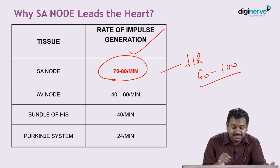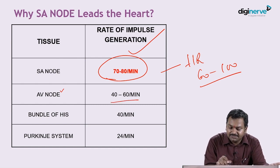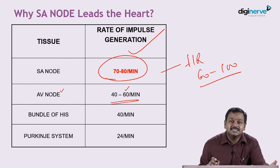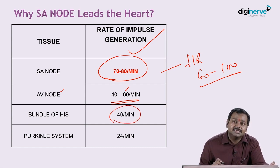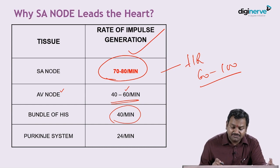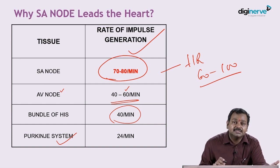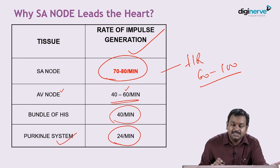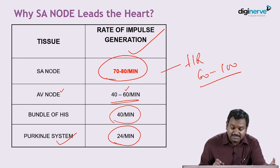Supposedly the SA node is not functioning, the next part of the conduction system — the AV node — will take over. Remember, the heart rate for the AV node is 40 to 60, meaning the maximum heart rate achievable is 60. If the Bundle of His is acting as the pacemaker, the maximum heart rate achievable is 40. If all three are not functioning, then the Purkinje system would take action, meaning the ventricle would beat on its own. Please remember: if the Purkinje system takes over, the maximum heart rate achievable is 24 per minute.